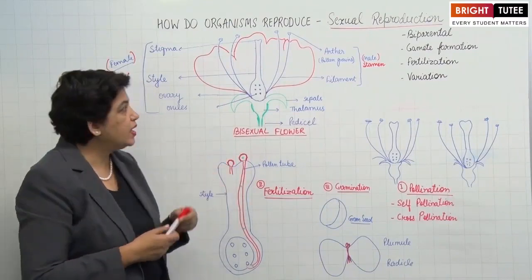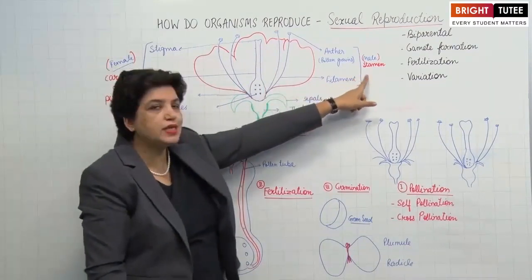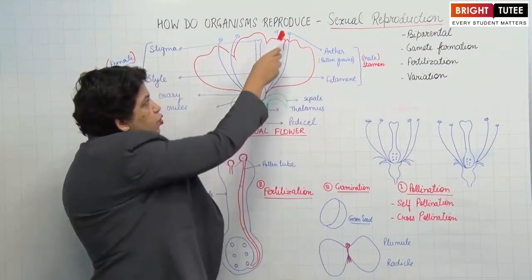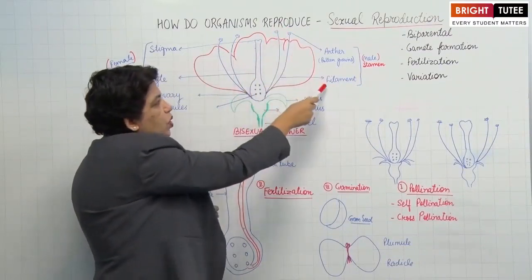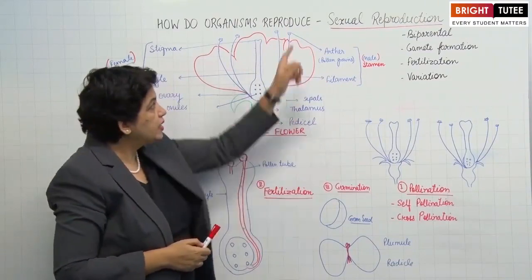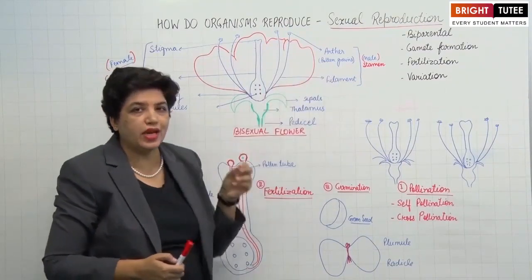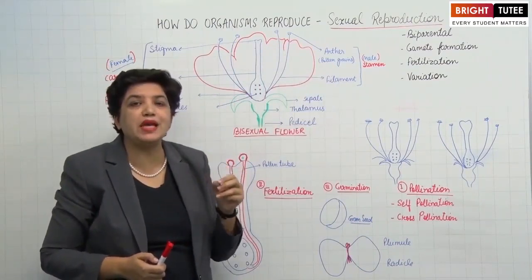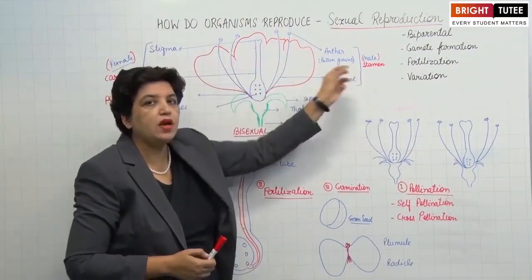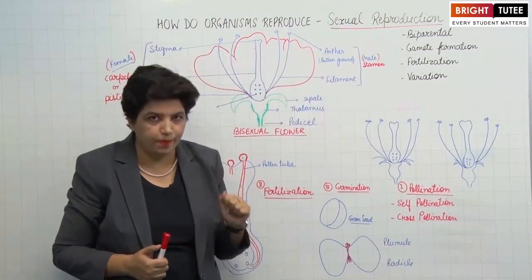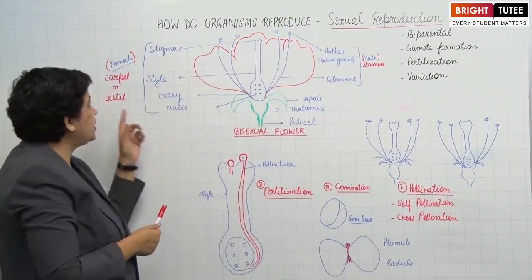The next layer is the male reproductive structure called the stamen. Each stamen has two parts: the anther at the top and a stalk-like structure called the filament. The anther bears a yellow powder called pollen grains. The pollen grains contain the male gamete. So the anther plus filament forms the stamen, which is the male reproductive part of the flower.